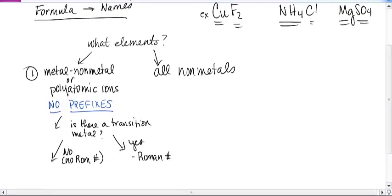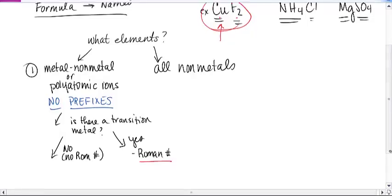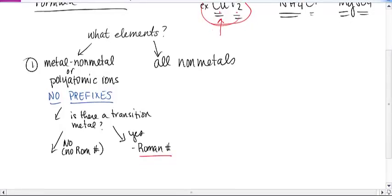Just taking a look at some of the examples we have, let's take a look at this first one here. CuF2, okay? Metal, non-metal. Is there a transition metal? Yes, there is a transition metal. This copper is in the transition metal part of your periodic table. That means I need a Roman numeral with it.